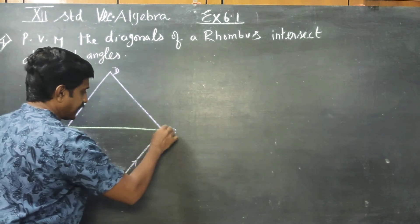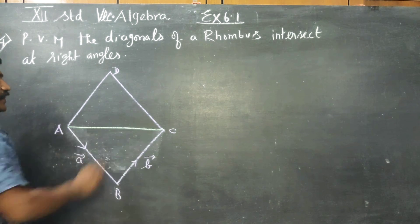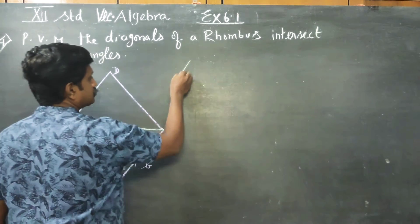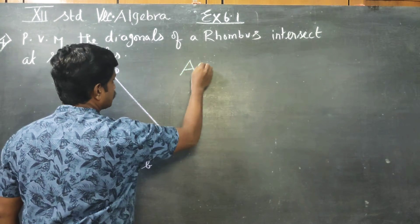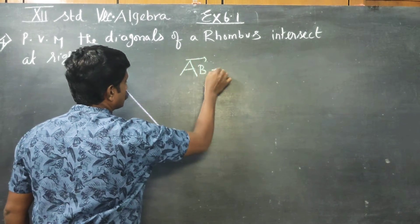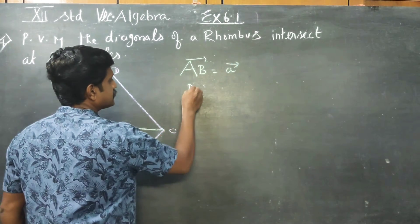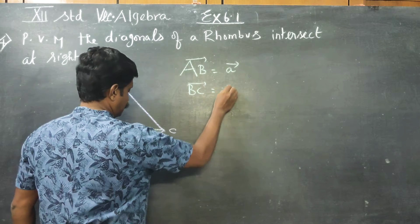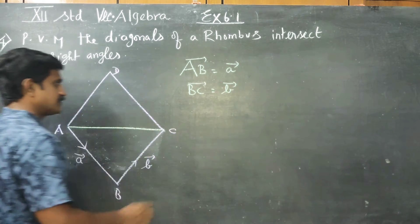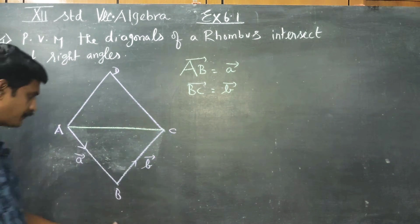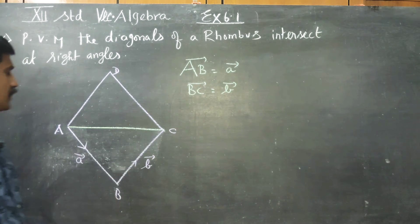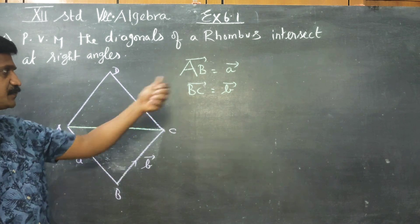First, I am going to find the diagonal AC. Let AB is equal to a vector, BC is equal to b vector. This is not position vector, this is actual vector. AB is a vector and BC is b vector.